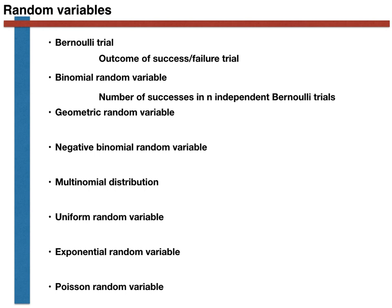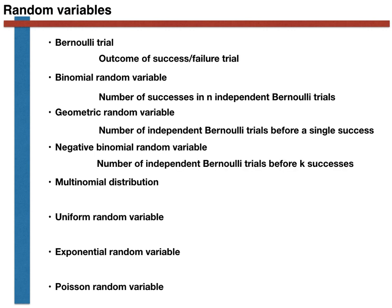By similarly considering multiple Bernoulli trials, we also arrived at the geometric and negative binomial random variables. We said that the geometric random variable gives the number of independent Bernoulli trials that had to be performed before a single success, and that the negative binomial random variable was a random variable that measured the number of trials that would have to be observed before exactly k successes were obtained.